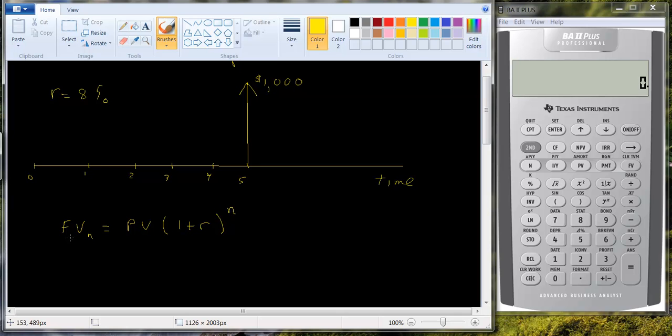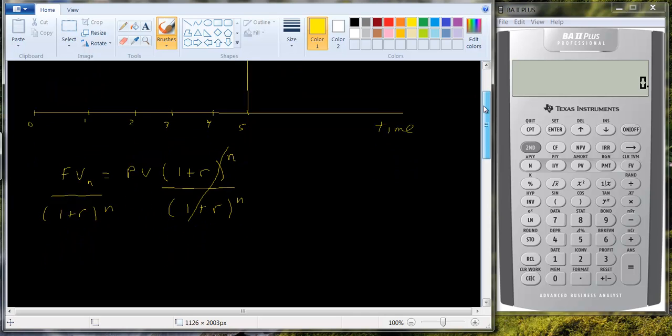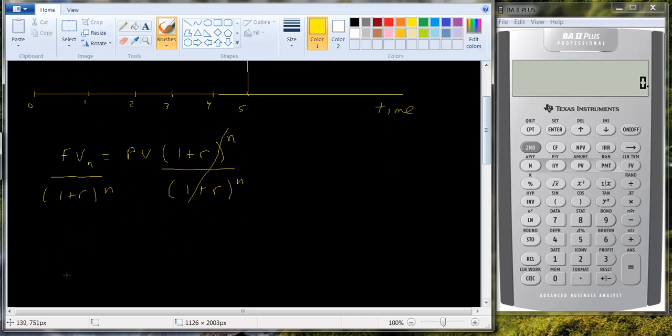Well, we can divide both sides by one plus r to the n, and you can see that these cancel.